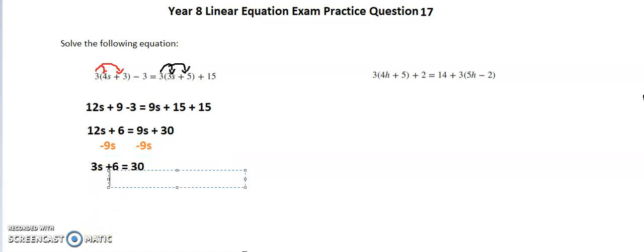I'm going to get rid of my constant on one side, so I'll take away 6 from both sides because it's an equivalent relationship. That leaves me with 3s is equal to 24.